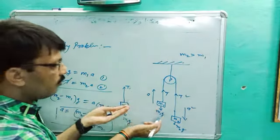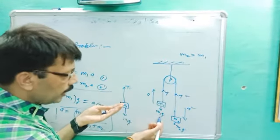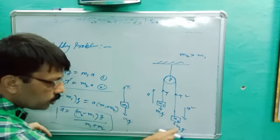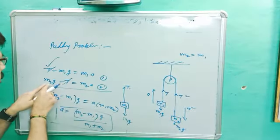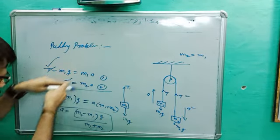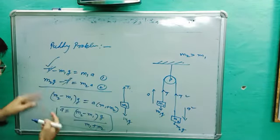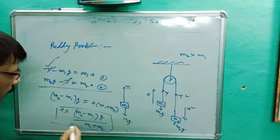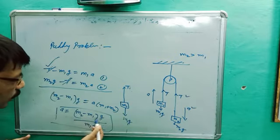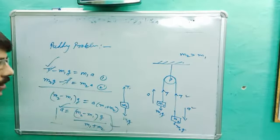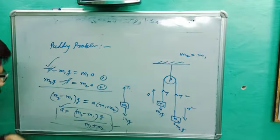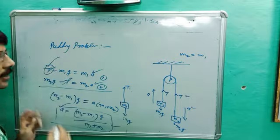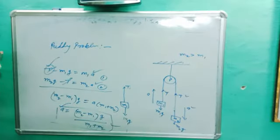To recap: if a body is going up, T minus M1G equals M1A by Newton's second law. If a body is coming down, M2G minus T equals M2A. Adding both equations, T cancels. We get M2G minus M1G equals M1 plus M2 times A, so A equals (M2 minus M1)G divided by (M1 plus M2). Substituting A into either equation gives the tension in the string.